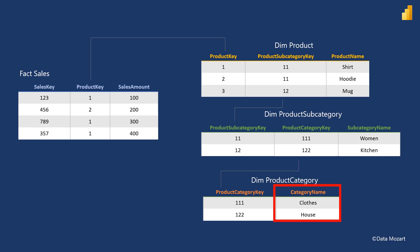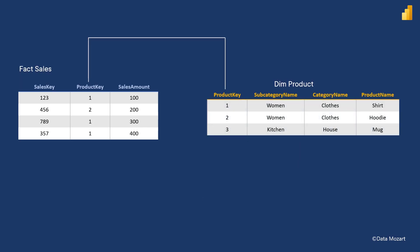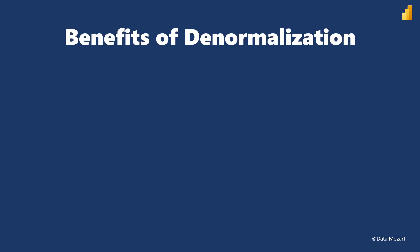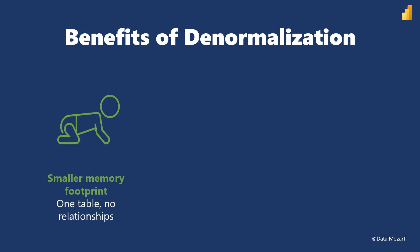This is the so-called snowflake dimension, where multiple normalized tables are used to describe a single business entity. Now, imagine that most analytic queries target the category of the product. Instead of performing three joins each and every time a query is run, we can denormalize the data model and put all the attributes within one table — dim product. We would have redundant data for product subcategory and product category, but loading only one table could be more efficient in terms of storage and performance, with no more relationships between these tables and thus a potentially smaller memory footprint.